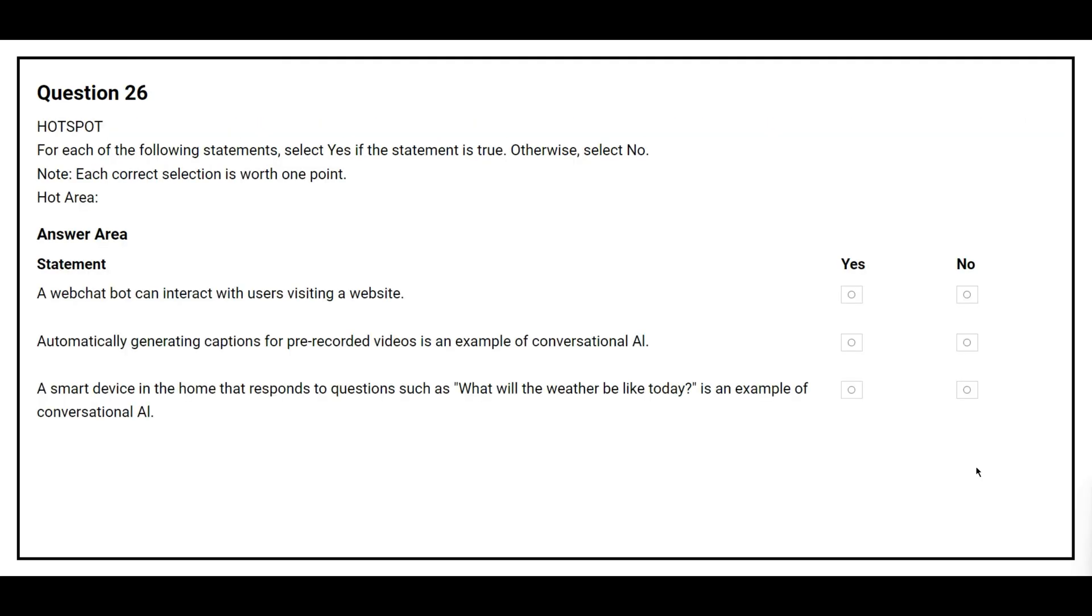Question number 26. For each of the following statements, select yes if the statement is true, otherwise select no. The first statement is, a web chatbot can interact with users visiting a website. The correct answer is yes. The second statement is, automatically generating captions for pre-recorded videos is an example of conversational AI. The correct answer is no. The third statement is, a smart device in the home that responds to questions such as what will the weather be like today is an example of conversational AI. The correct answer is yes.